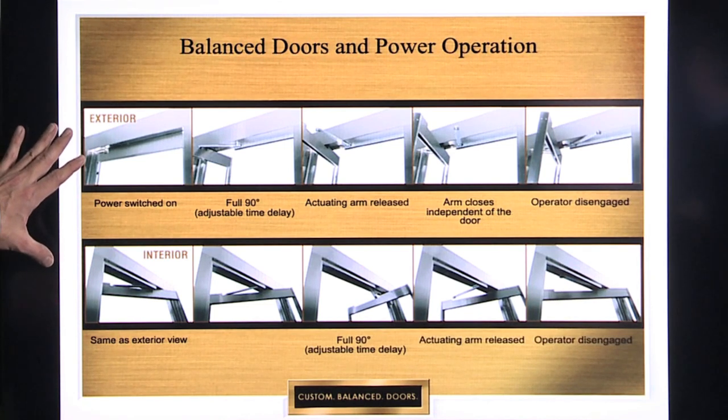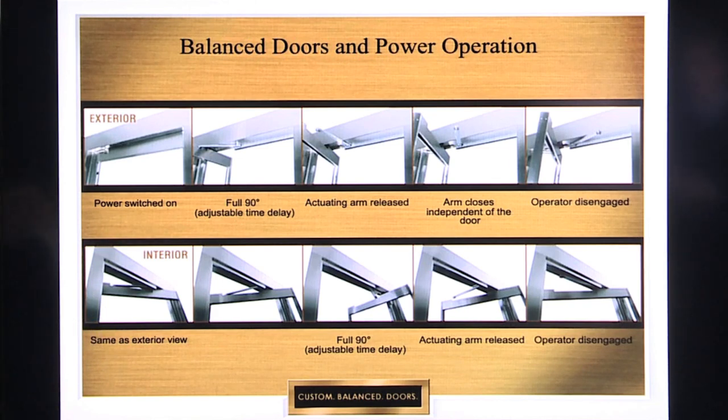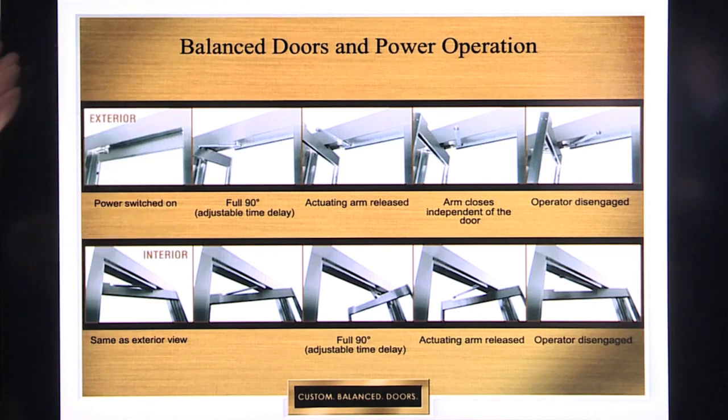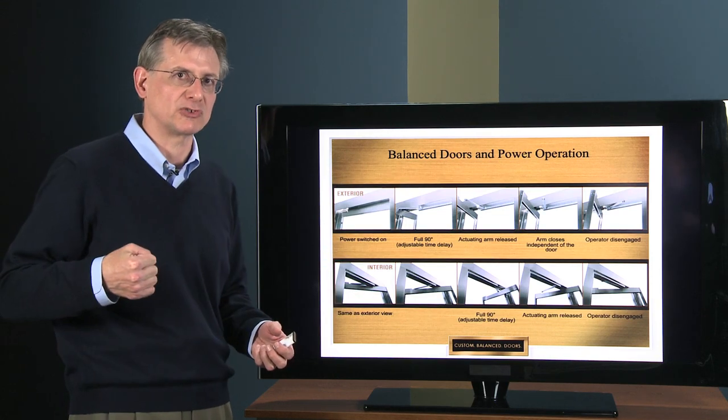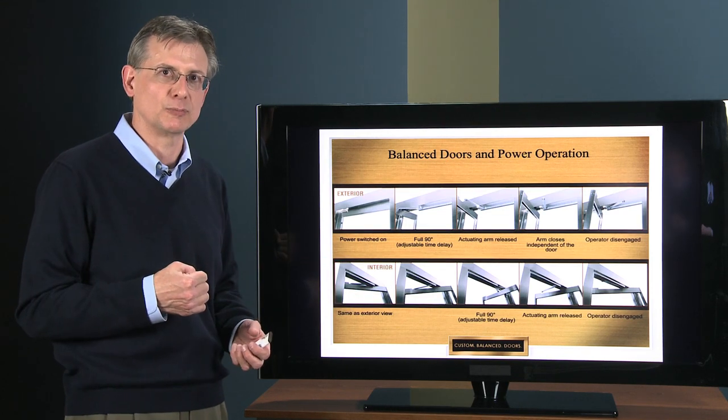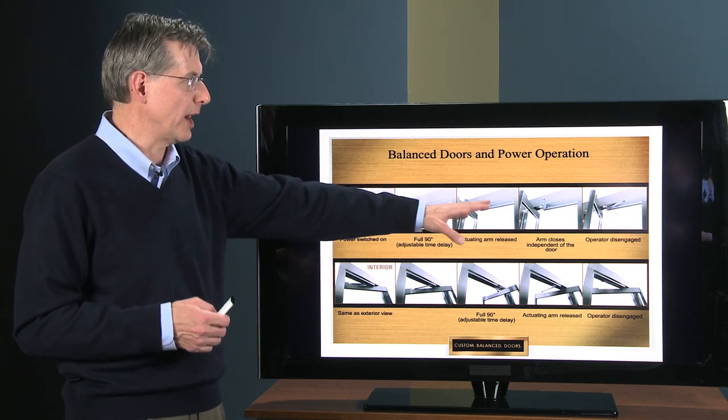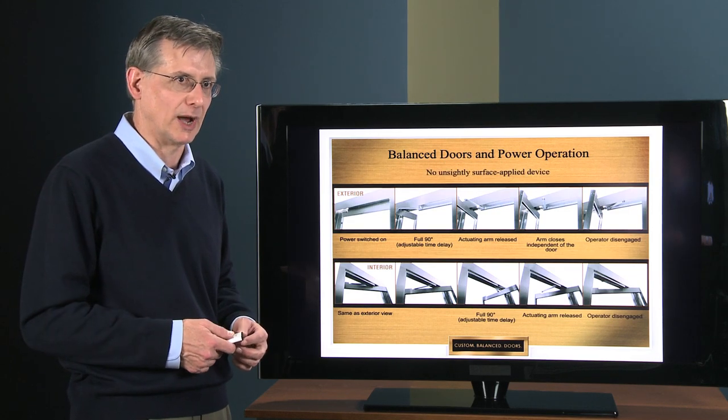And that's very important because that disconnect allows you to use all the balanced hardware and for that door to operate manually with the same ease of operation as any other balanced door. As soon as you attach that arm to the door, like the old-fashioned surface-mounted application, you have to overcome all that spring tension in the operator, which makes that door a lot more difficult to open manually. If you disconnect the two, the operator arm from the door, you don't have to worry about overcoming all that spring tension in the operator.